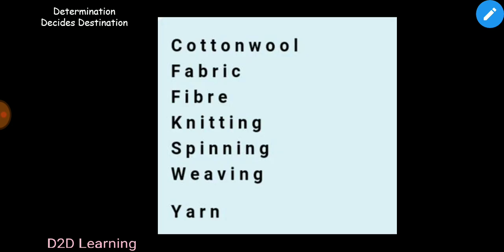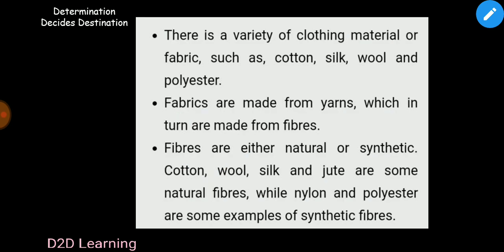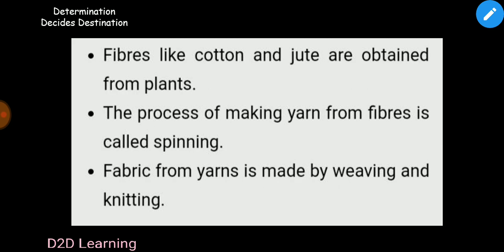Finally, in this chapter, we will talk about cotton, wool, fabric, fiber, knitting, spinning, weaving, yarn - these are the basic terms. Here is a summary: the clothing materials are different - cotton, silk, wool, polyester, etc. Fabrics are made from yarns, and the fibers are natural or synthetic. Natural fibers include cotton, wool, silk, jute. Synthetic fibers include nylon and polyester. Cotton and jute fibers come from plants. Yarns are made from fibers through spinning. Spinning is the making of yarn. Knitting is one method of fabric making, and weaving is the other method.